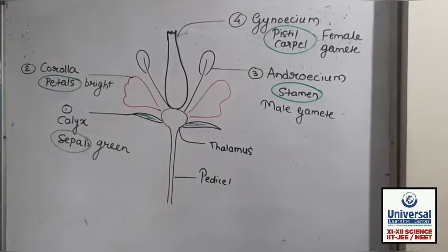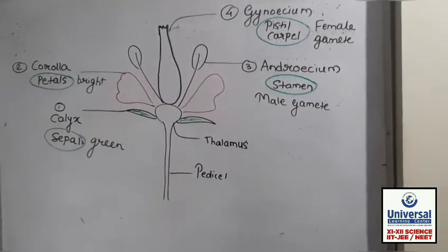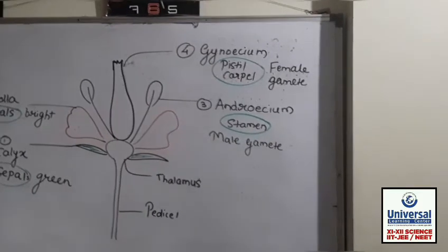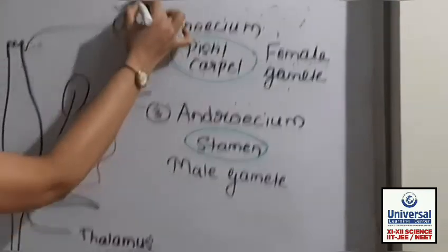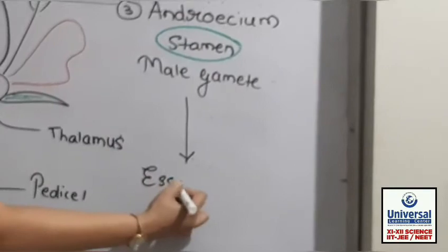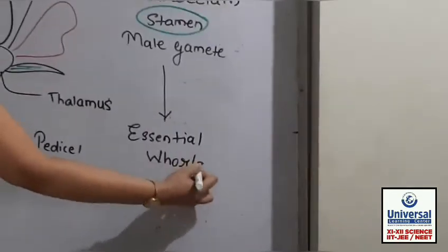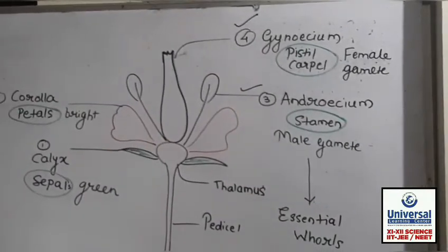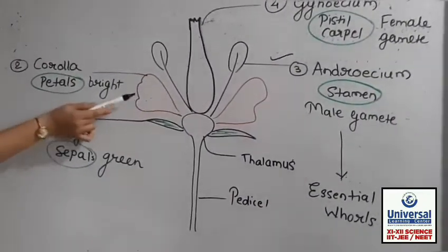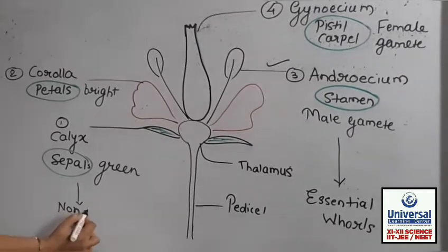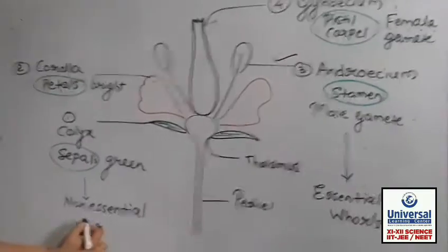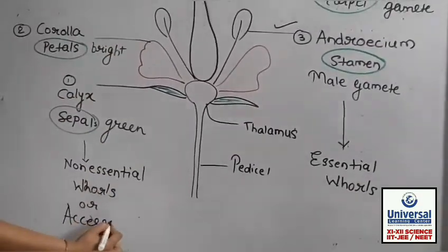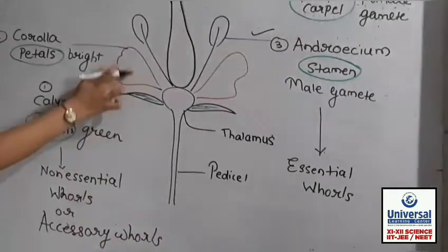One question: which are the essential walls of the flower and which are non-essential? The most important walls are androecium and gynoecium — these are the essential whorls because they contain male and female gametes and are responsible for reproduction. Corolla and calyx are non-essential, and since they assist reproduction, they are called accessory whorls.